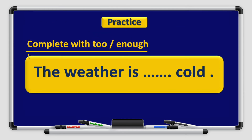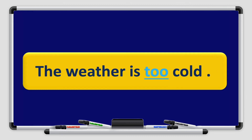Let's practice: complete with 'too' or 'enough.' Read the sentence more than once to find the correct answer. The weather is ___ cold. Look at the verb first and find the adjective — see its location. 'Cold' is the adjective and it comes after the space, so 'too' comes before it. The weather is too cold — he can't drive.